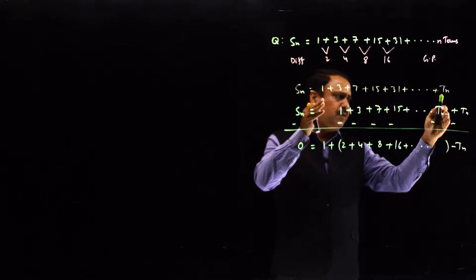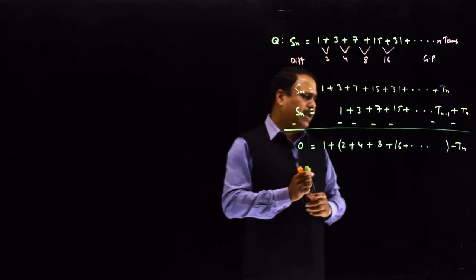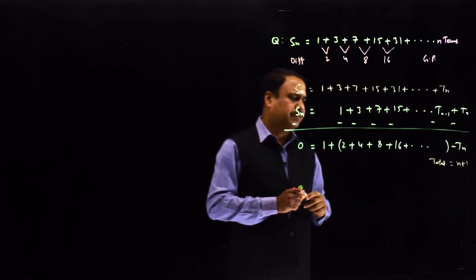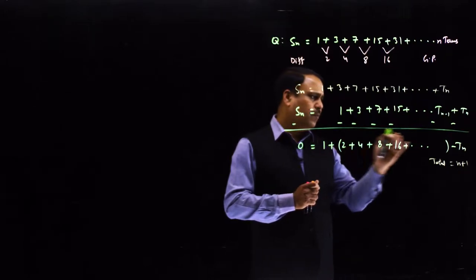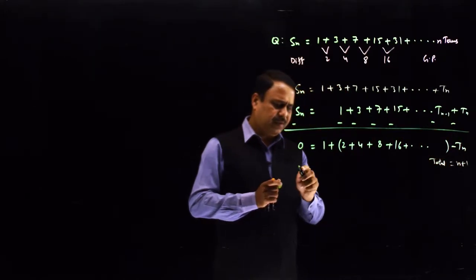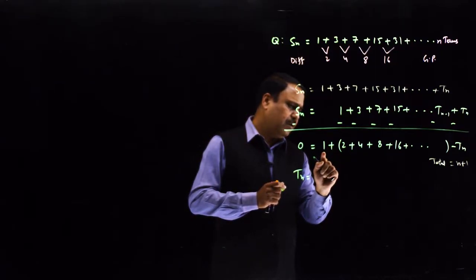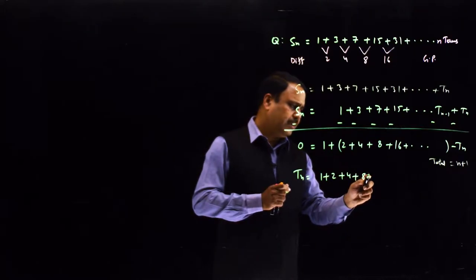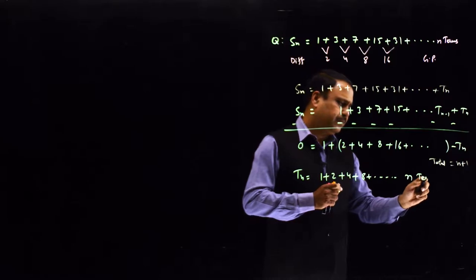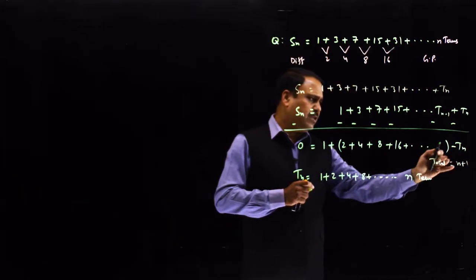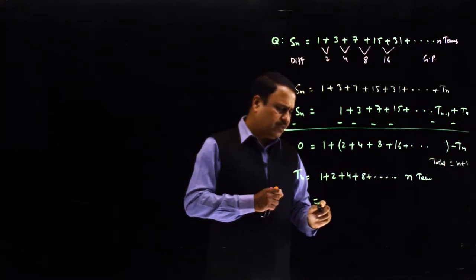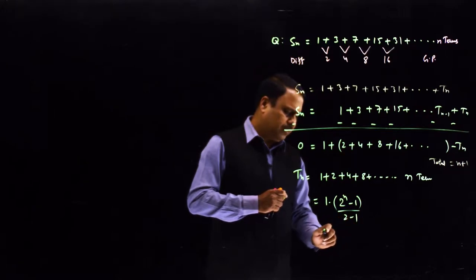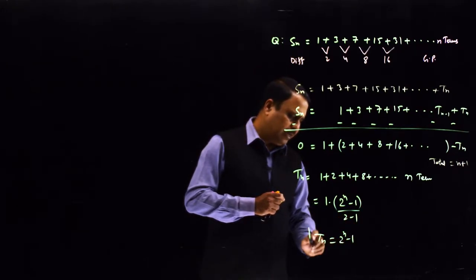Now count the number of terms. Up to this point we have n terms, and one term is shifted, so there is one extra term — total number of terms is n plus 1. Out of these, one term is removed from each side, so two terms are removed. The remaining series 1 plus 2 plus 4 plus 8 has n terms and is a GP with first term 1 and common ratio 2. Applying the GP sum formula: a times (rⁿ minus 1) over (r minus 1), we get Tₙ equals 2ⁿ minus 1.